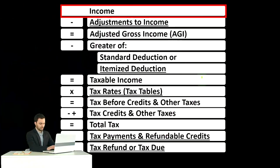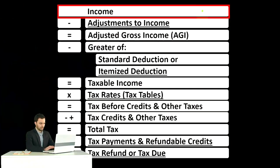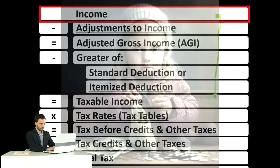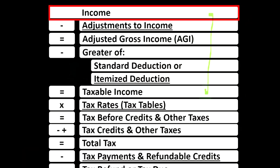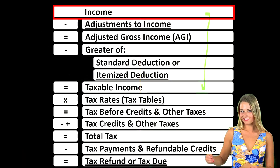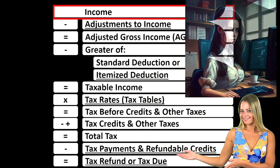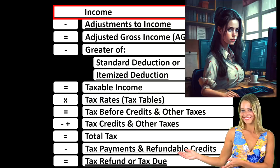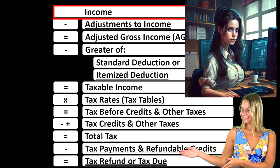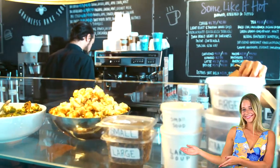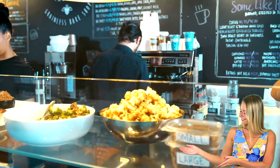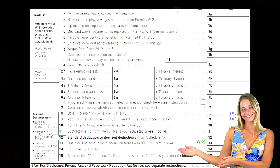Looking at the income tax formula, we're focused on line one income. The first half of the income tax formula is in essence an income statement, but just an outline of scaffolding with other forms and schedules flowing into it. For example, the Schedule C, which is in essence an income statement in and of itself. Business income minus business expenses gives us the business net income, which would flow into line one income of our income tax formula.